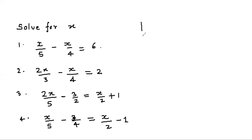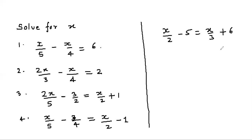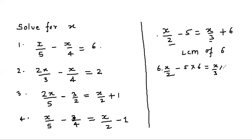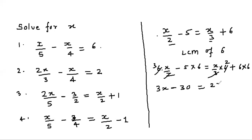I am giving you a little help: when x is present on both sides, suppose you have x/2 - 5 = x/3 + 6. In such a situation we multiply through by the LCM of 2 and 3, which is 6, giving 3x - 30 = 2x + 36.